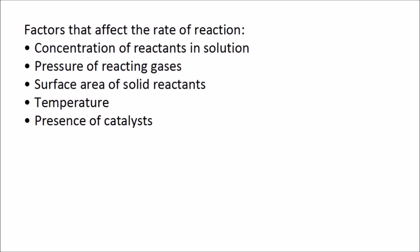Here are five factors that affect the rate of reaction: the concentration of reactants in solution, the pressure of reacting gases, and the surface area of solid reactants. These three account for the three states of matter — liquids, gases and solids — and then we have temperature and the presence of catalysts. Before we look at these, we first need to understand collision theory and activation energy, because that explains how a reaction happens in the first place.